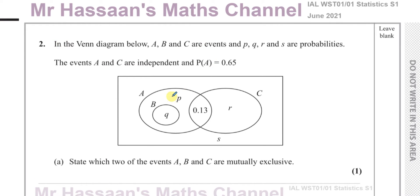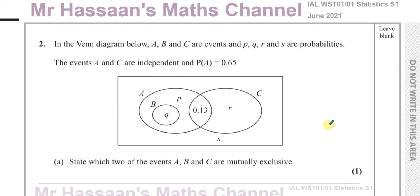The Venn diagram below shows events A, B and C, where P, Q, R and S are probabilities within some of those events. The events A and C are independent, and the probability of A is 0.65. State which two of the events A, B and C are mutually exclusive.